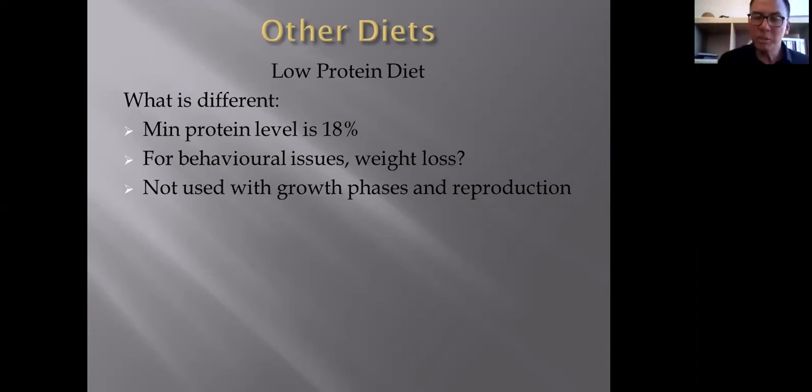Because it is low-protein, we do not use it with growth phases and reproduction. Because it's a big no-no, remember this. No low-protein diet for growth phases like when a growing pup, between the age of zero and potentially even up to 18 months, if not at least a year. Don't give any low-protein diet because your puppy needs to grow.